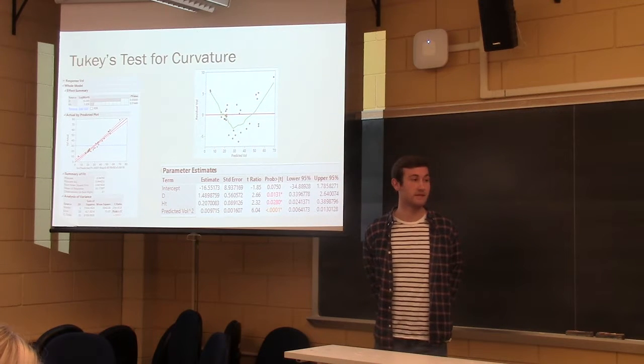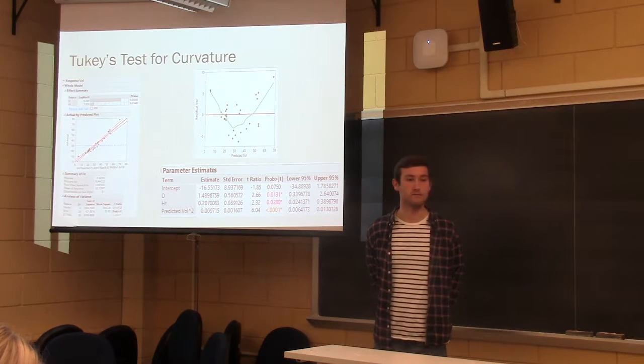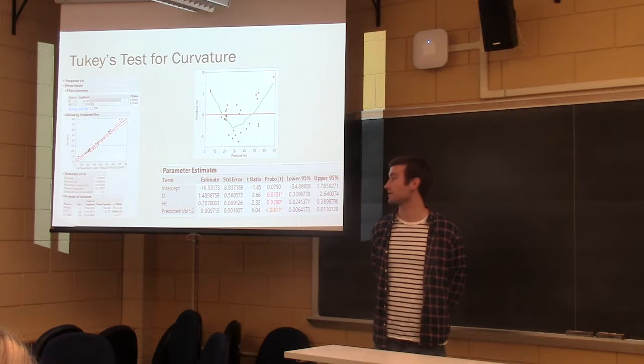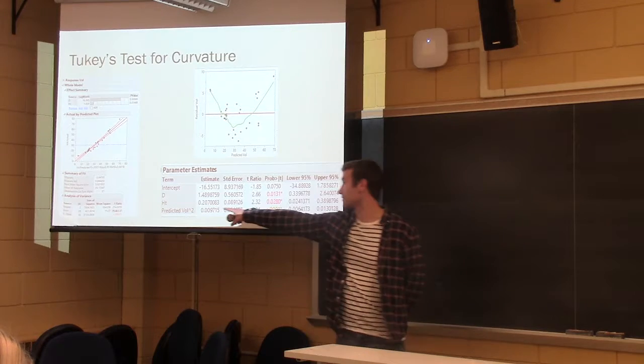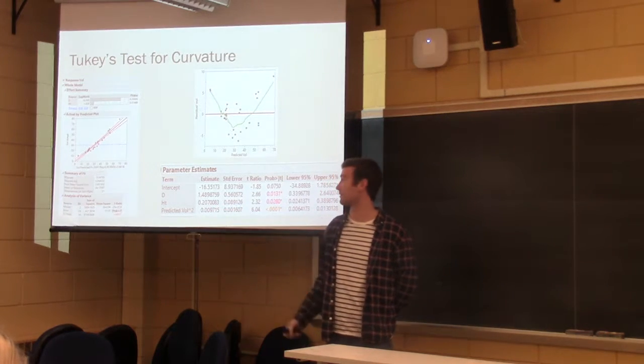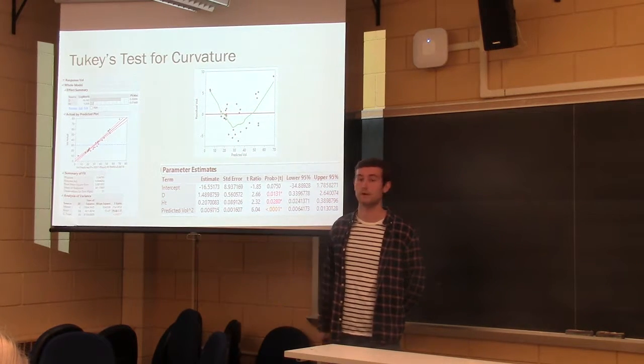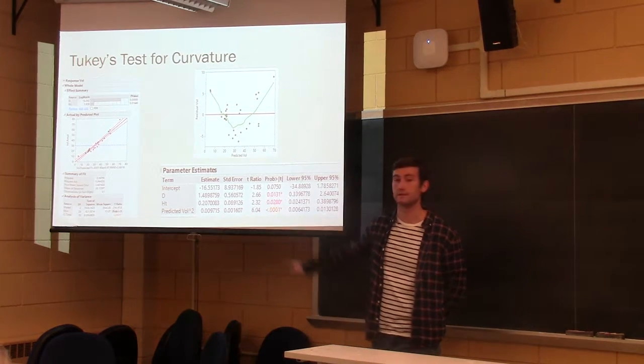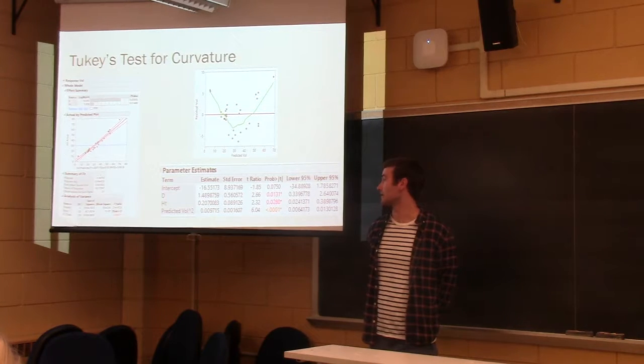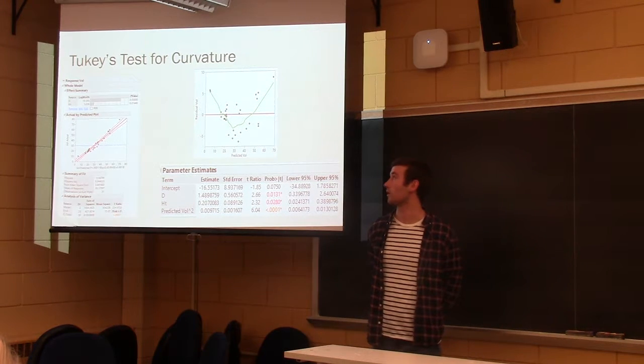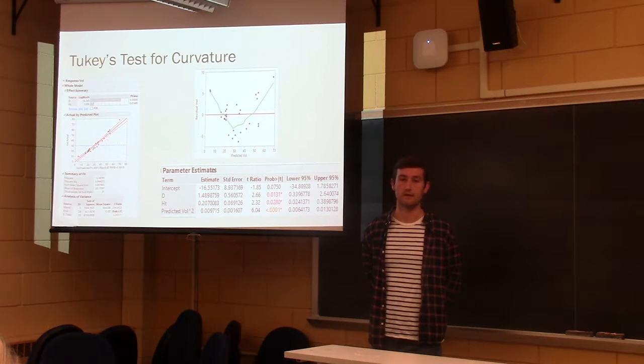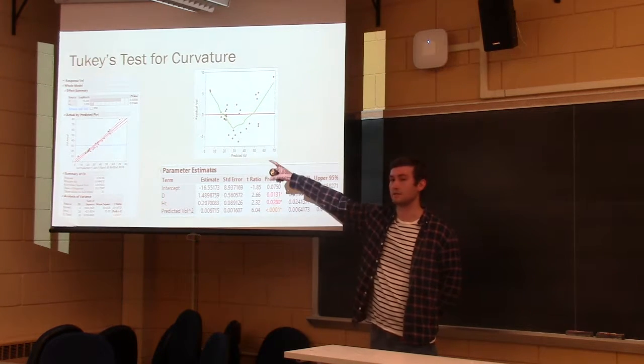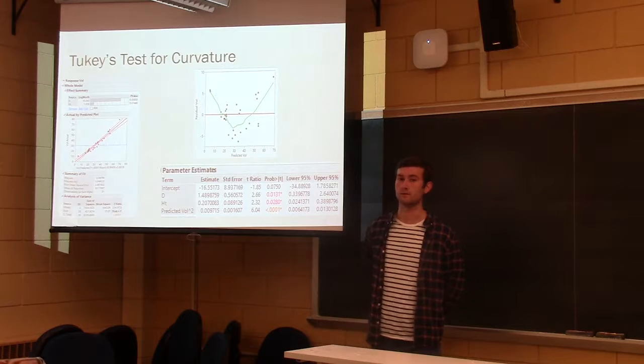And then you'd fit that in a different regression model. You can see right there the predicted volume squared for this example, where volume would be the response. You can see the predicted volume squared has a very significant p-value of less than 0.001, which would indicate that there's curvature in this example. And you can see that from the top right plot, it's very clear that there's curvature.